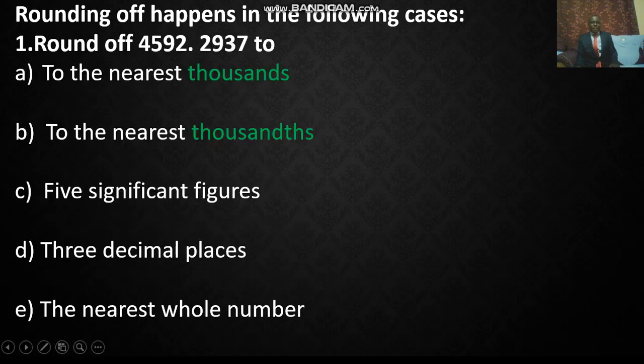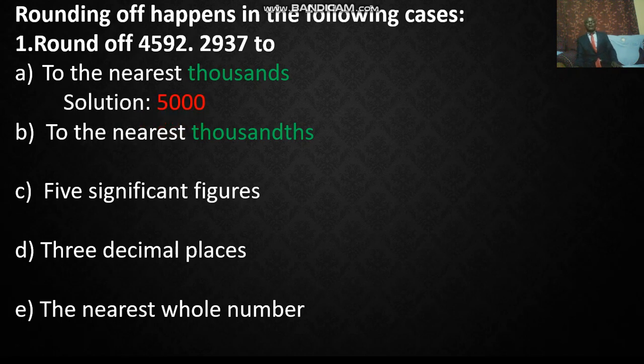We shall use examples. For instance, rounding off happens in the following cases. One: round off 4,592.29372 to the nearest thousands. Now we have 4,592, and in this case 592 is more than 500, so the number adjusts to 5,000.